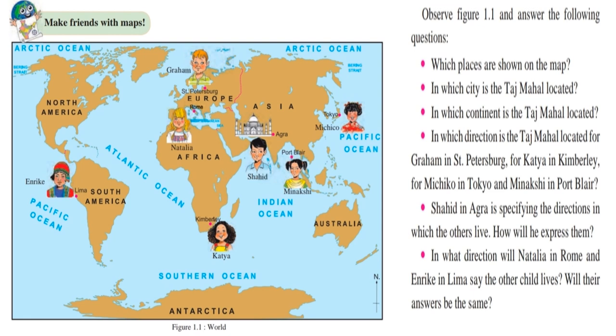We all have seen a globe. Globe is a miniature model of the earth. The horizontal and vertical lines drawn on the globe forms a net. This net is called a graticule. With the help of graticule, we are able to determine the location of any place on the earth.